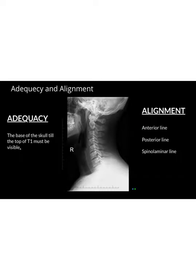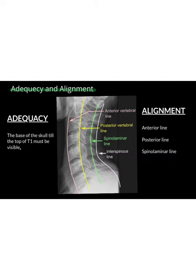A stands for adequacy and alignment on the lateral view. Adequacy dictates that we need to see from the base of the skull all the way to the top of T1. We can see here C1, C2, C3, C4, C5, C6, C7, and then the top of T1. Alignment dictates that we have three uninterrupted lines: the anterior vertebral line on the anterior aspect of the vertebrae, the posterior vertebral line on the posterior aspect, and the spinal laminar line on the anterior aspect of the spinous processes.